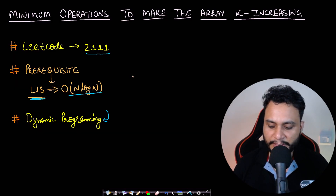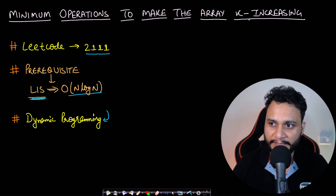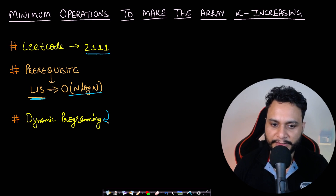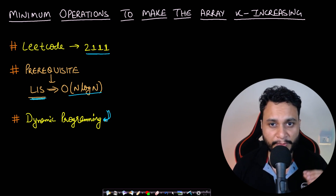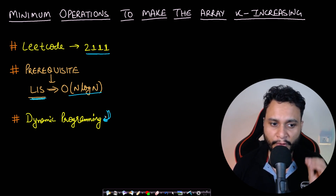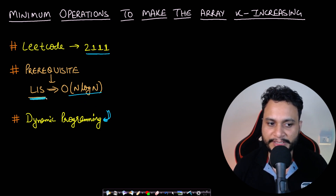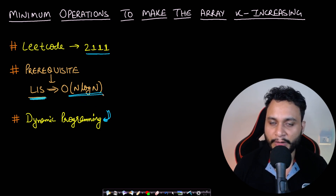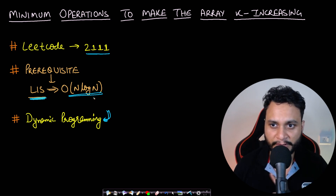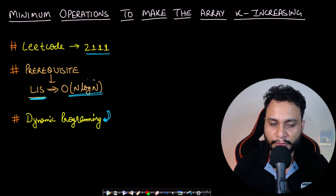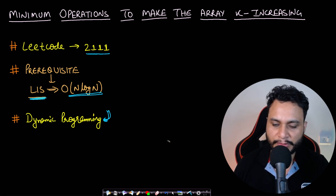Hello guys, welcome back to Tech Dose. In this video we will see the 'Minimum Operations to Make the Array K-Increasing' problem, which is LeetCode number 2111, from the dynamic programming topic. A prerequisite before watching this video is to watch my video on how to solve Longest Increasing Subsequence in O(n log n). You will find the link in the description below and also in the i-button.